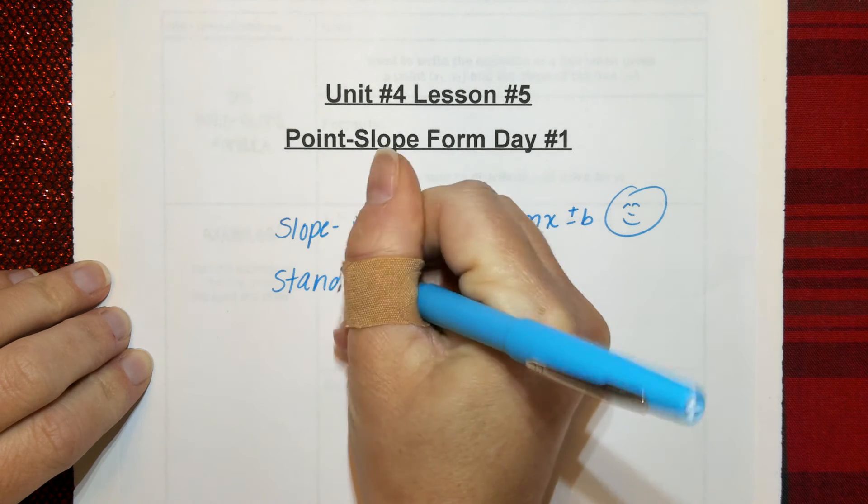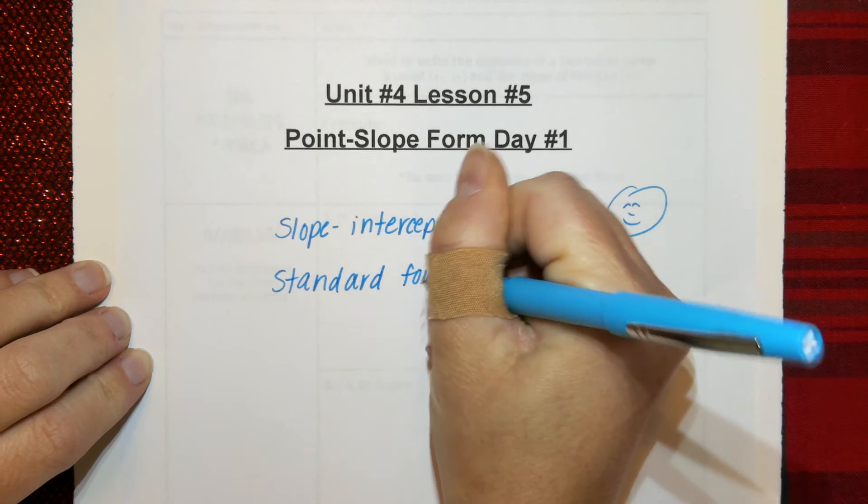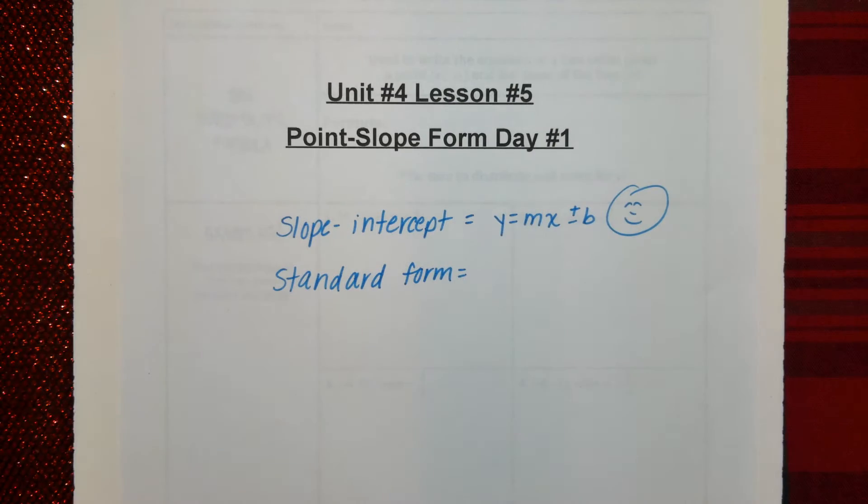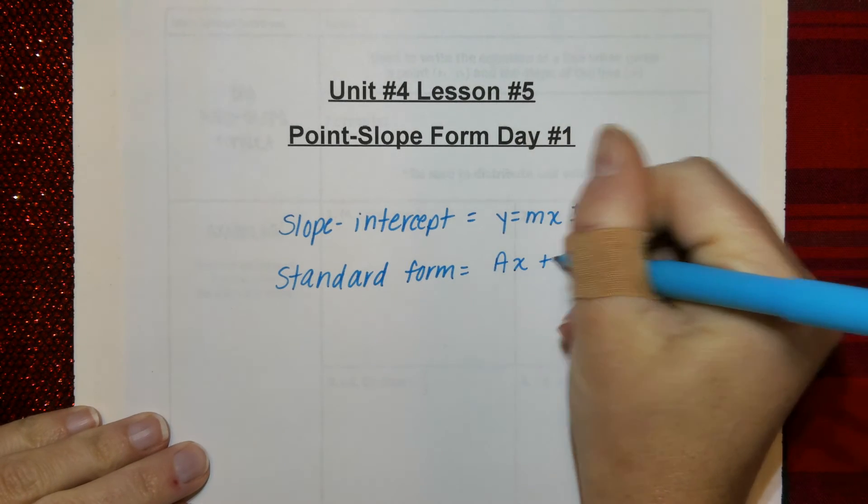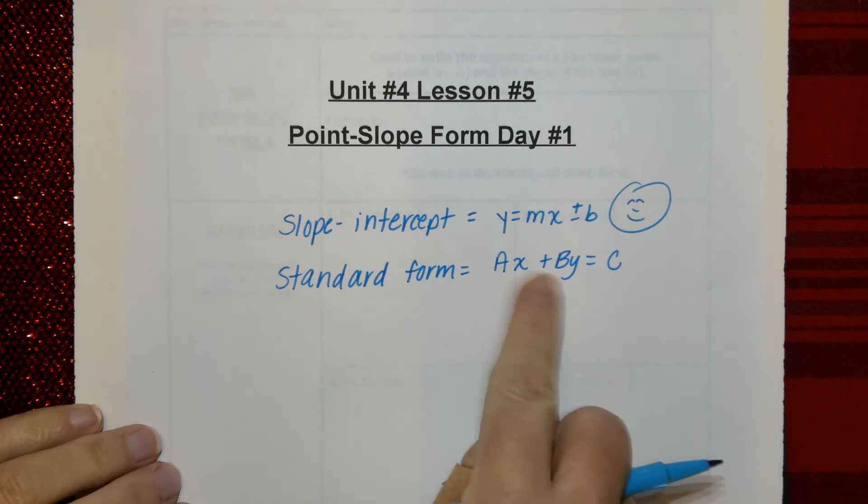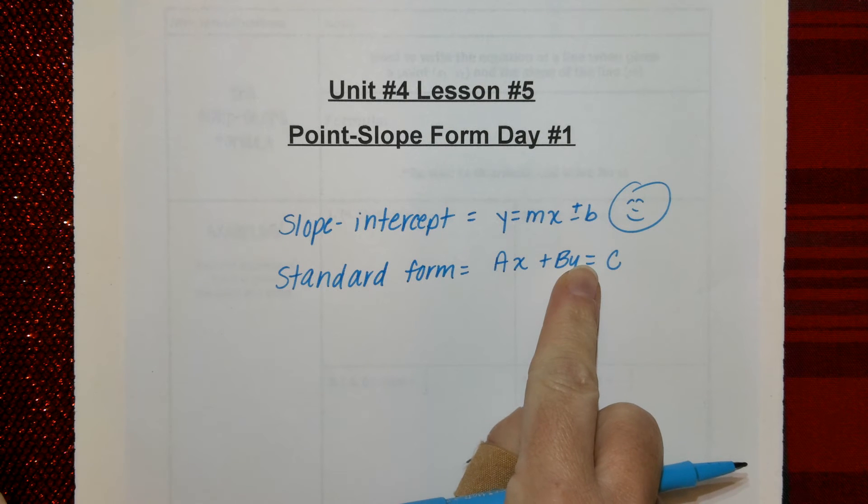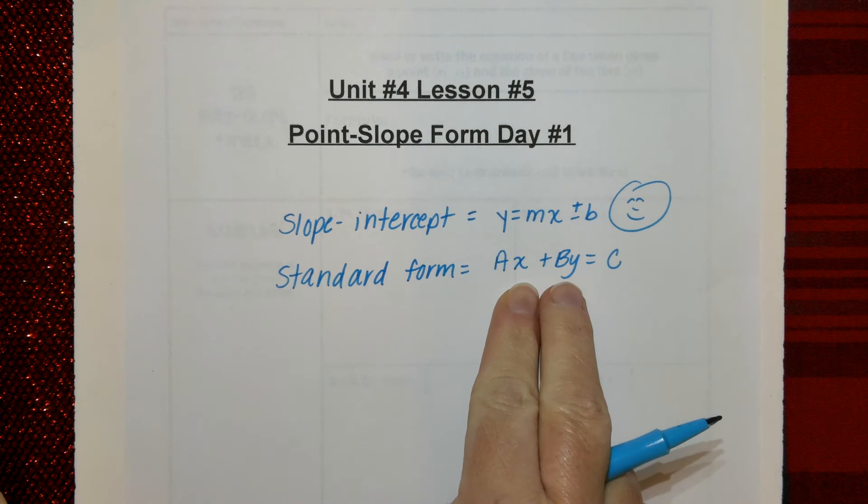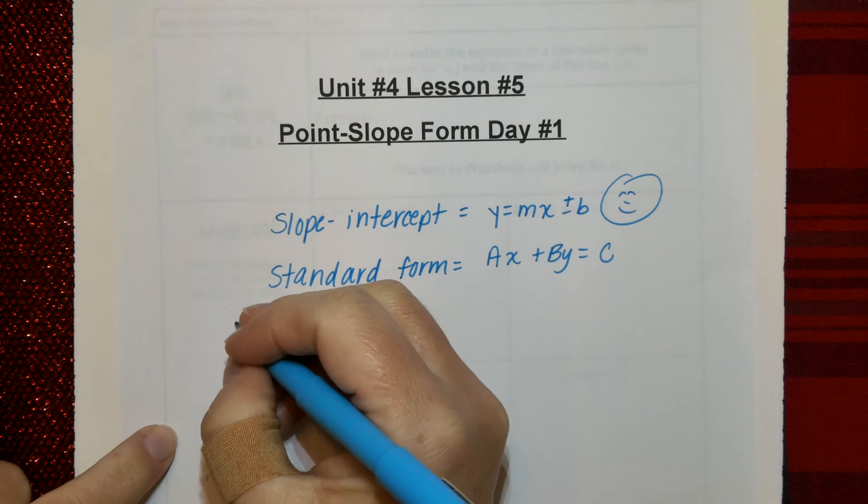Then we also learned about standard form. Standard form is not all that useful unless you're calculating the X intercepts and the Y intercepts. And that one is this: AX plus BY equals C. We did work with that before break. And we even manipulated that so that we took our standard form and we converted it into slope intercept form. Now, those are our review.